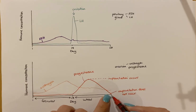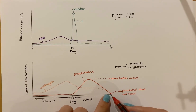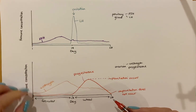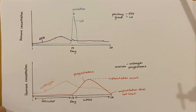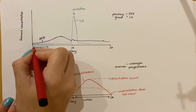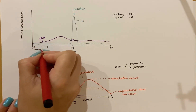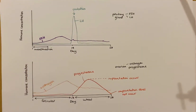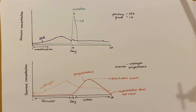When progesterone levels drop and implantation has not occurred, menstruation is then triggered because the endometrium layer is not maintained — and that would be the start of a new phase. Menstruation begins from around day one to roughly day five to seven. The new endometrium layer would then begin to be built up and grown by the next set of oestrogen, which would start to develop it.